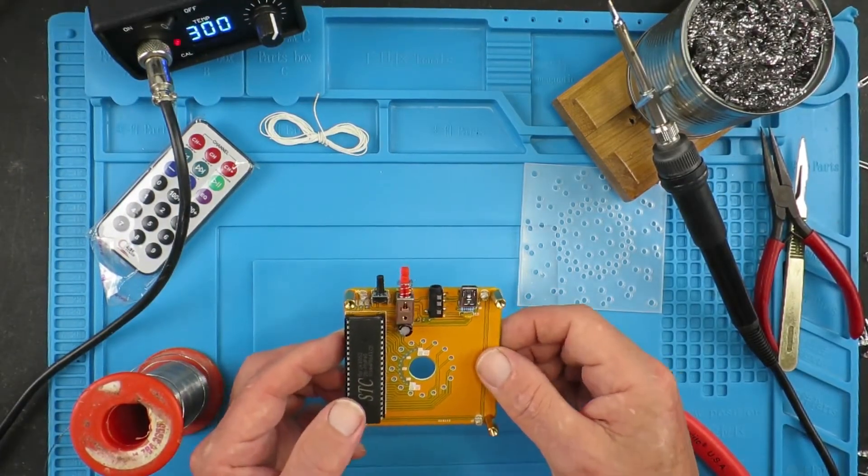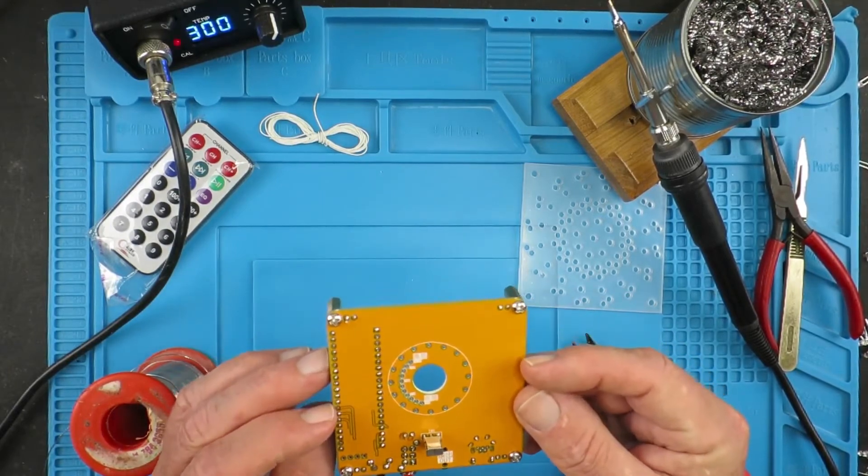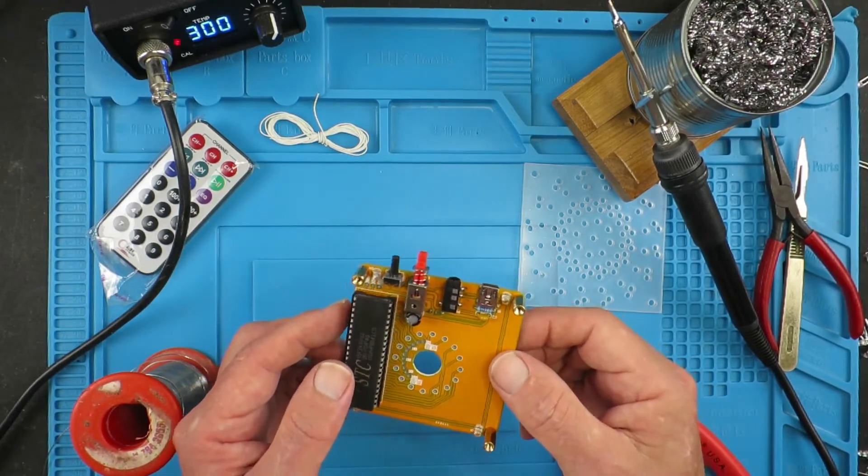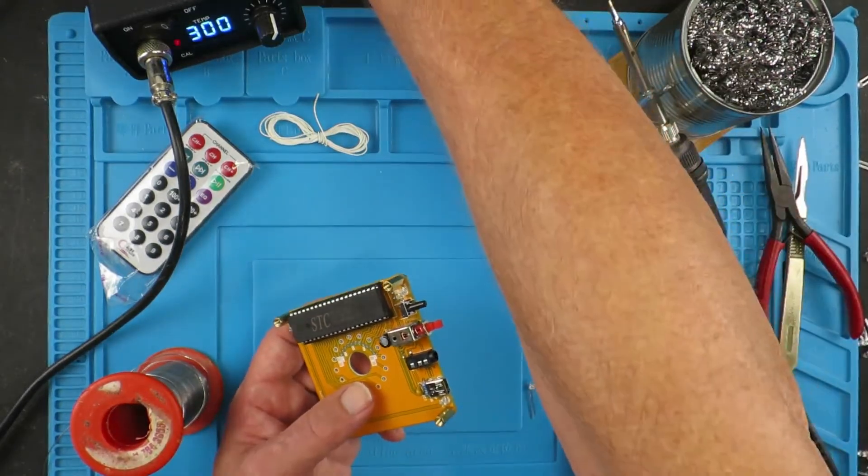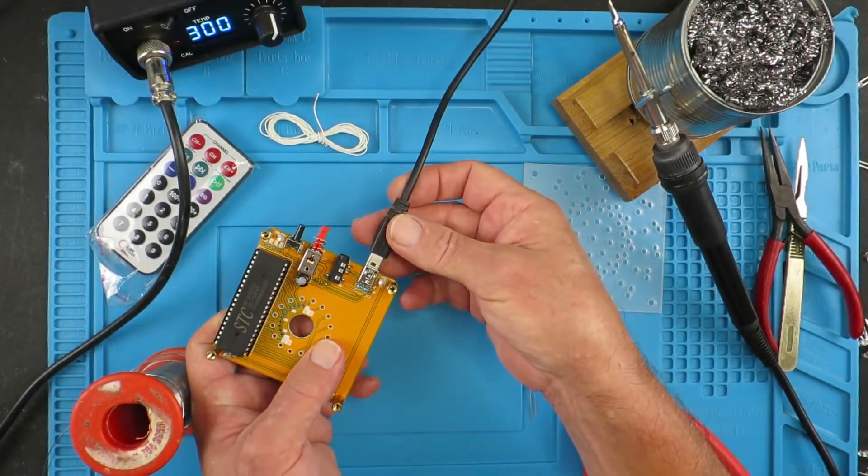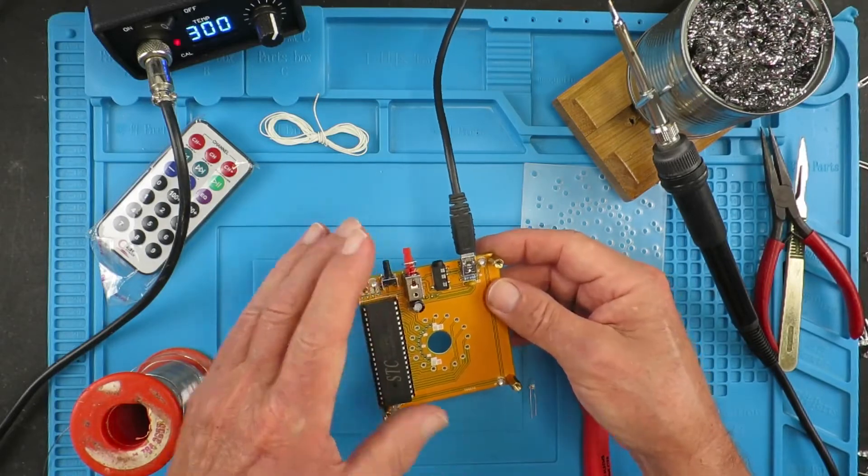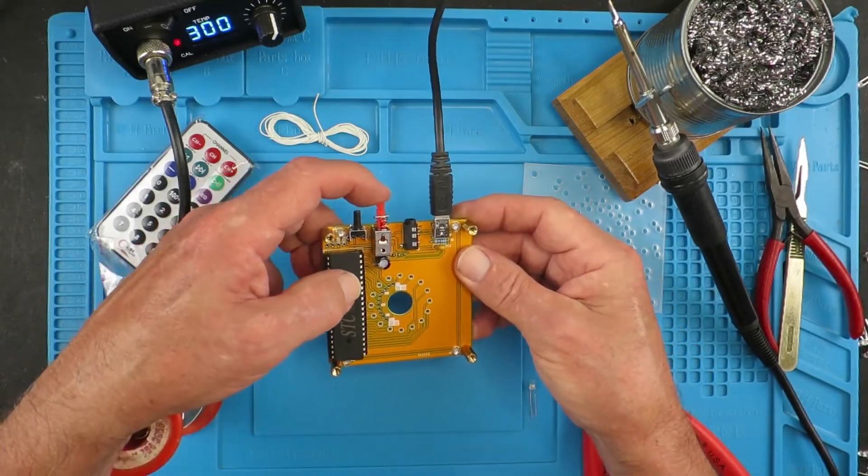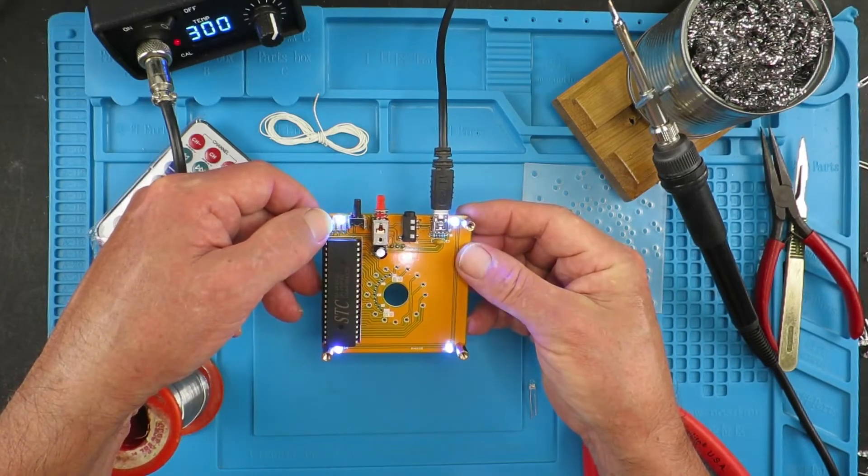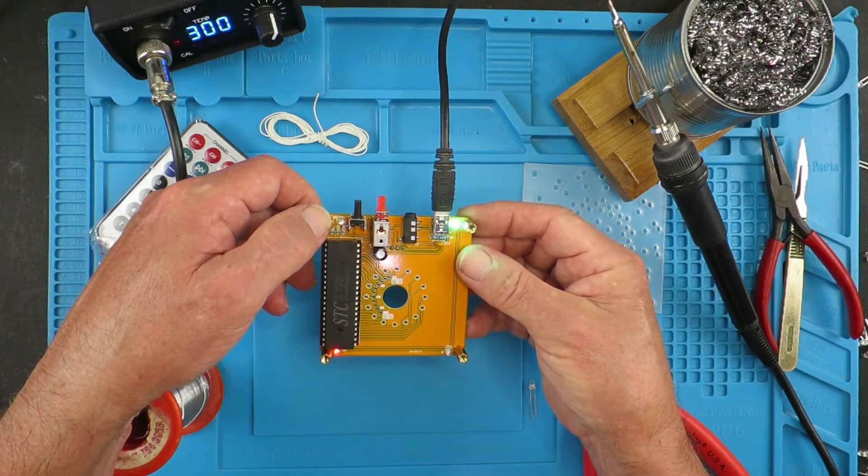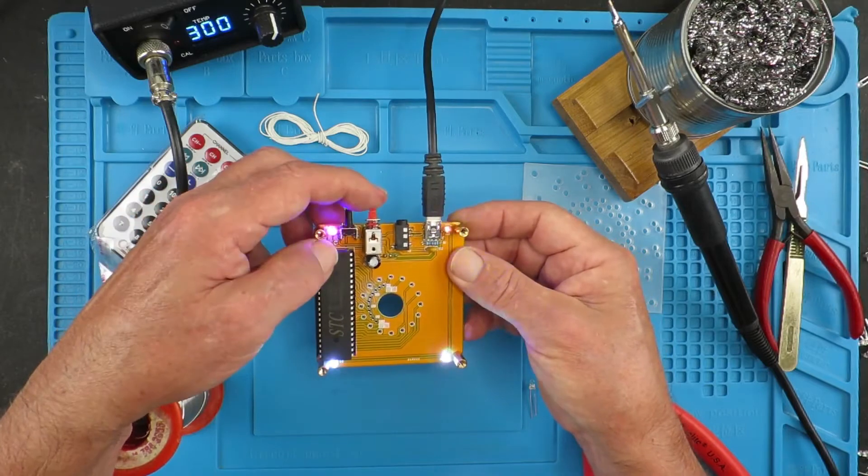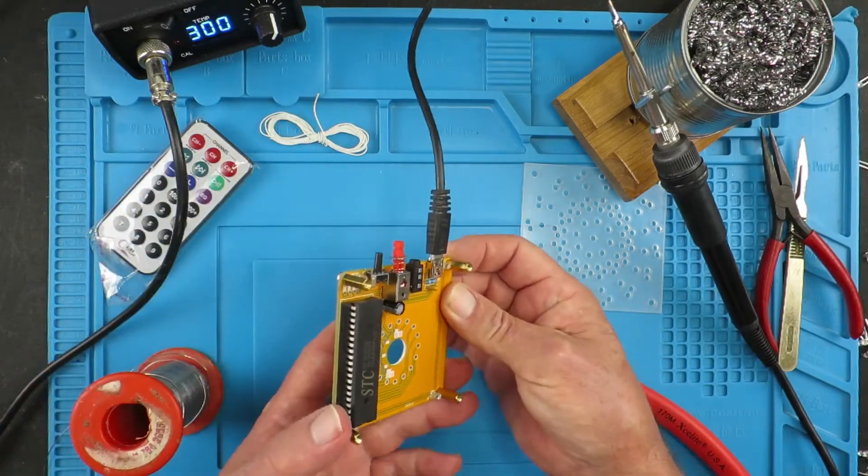With the main board complete, it's time to do a test. Before the test, just do a visual inspection. Joints look good and the components are hopefully the right way around. This takes a standard 5 volt USB connection. Let's connect that, switch on and see what happens. That's a good indication that the chip is working and we're getting our sequence of the four LEDs.